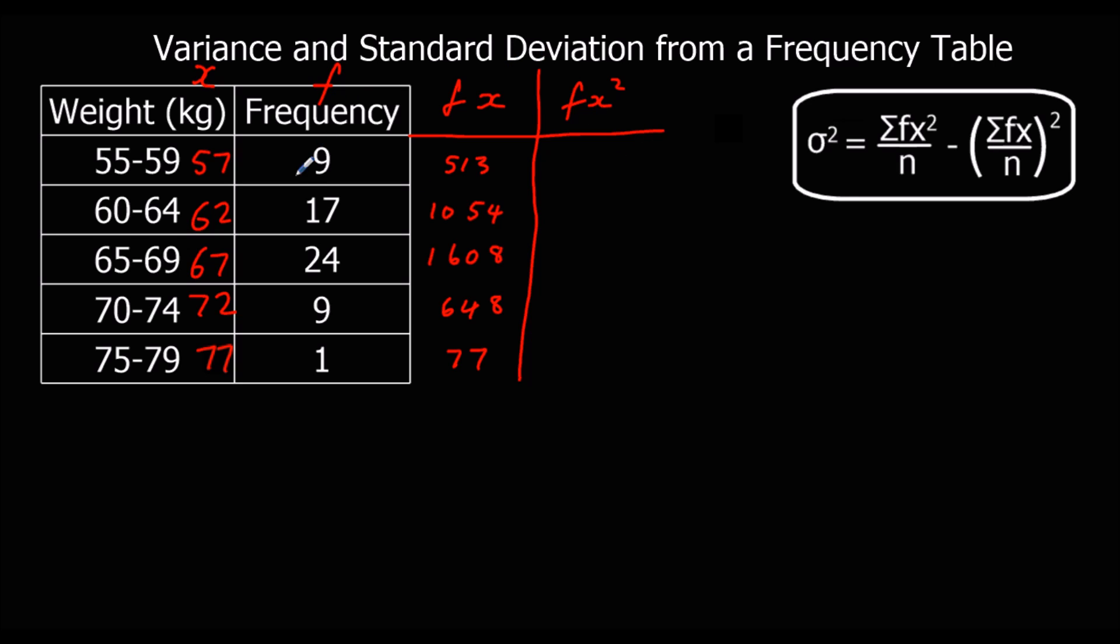fx squared is frequency times x squared. So 9 times 57 squared, which is 29,241. 17 times 62 squared is 65,348. 24 times 67 squared is 107,736. 9 times 72 squared is 46,656. And 1 times 77 squared, which is 5,929.